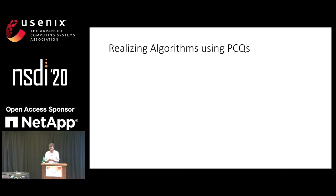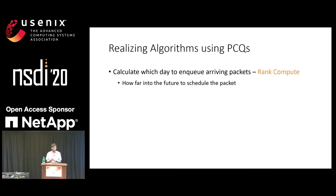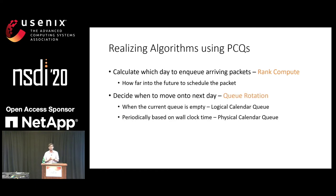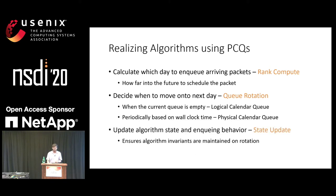Given this abstraction, any algorithm must take three key decisions. First, rank compute: when a packet arrives, which day to enqueue it into — this is a measure of how far in the future the packet should be scheduled. Second, queue rotation: when to move on to the next day. This can happen logically when the current queue is empty — we call this a logical calendar queue — which lets us implement work-conserving scheduling algorithms. Or we could do queue rotation periodically based on wall clock time, say every X microseconds — we call this a physical calendar queue — which lets us implement non-work-conserving scheduling algorithms. Finally, whenever a queue rotation happens, the algorithm must update its own state and adjust its enqueuing behavior so that its invariants are maintained.